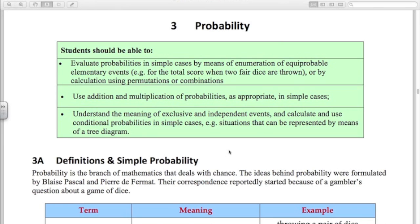Students should be able to evaluate probabilities in simple cases by means of enumeration of equiprobable elementary events, for example, for the total score when two fair dice are thrown or by calculation using permutations or combinations. Use addition or multiplication of probabilities as appropriate in simple cases and understand the meaning of exclusive and independent events and calculate and use conditional probabilities in simple cases, for example, situations that can be represented by means of a tree diagram. So there's a few things that we're going to look at in this video, covering the first and the second bullet point.